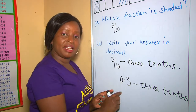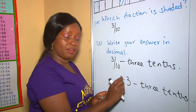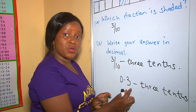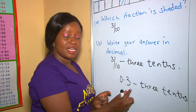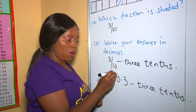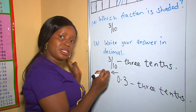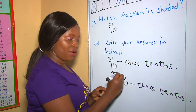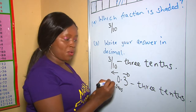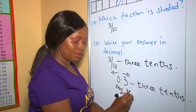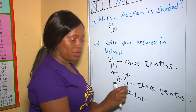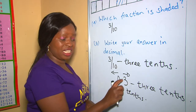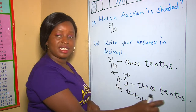Remember, after the decimal point, the first digit on the right — its place value is not 1s, it's tenths. On the left is where we have the 1s, but on the right, after the decimal point, we have tenths. And therefore these are 3 tenths. As you can see, this digit is 3, so these are 3 tenths.